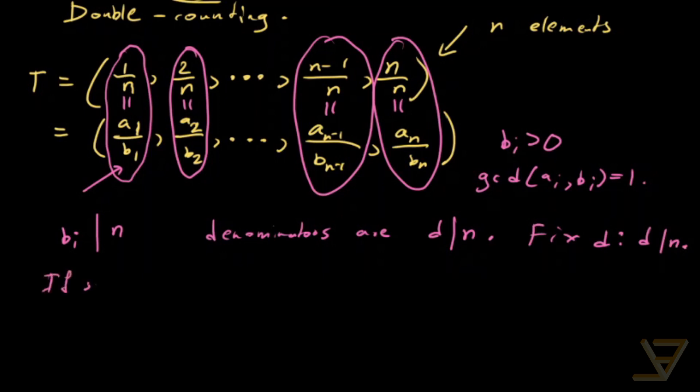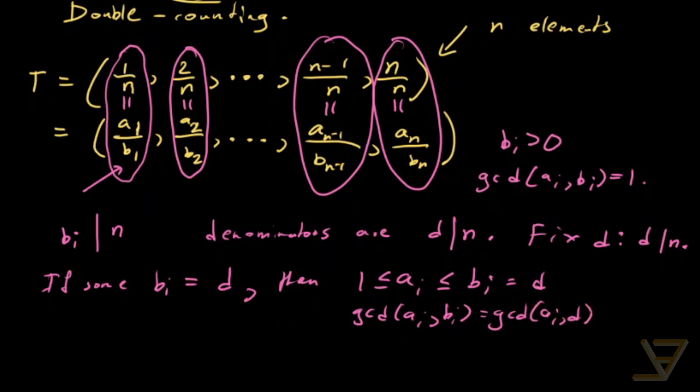If some bi equals d, then remember the ai is greater than or equal to 1 but less than or equal to bi which is equal to d. But GCD of ai and bi which equals GCD of ai and d is equal to 1 because it's a reduced form.